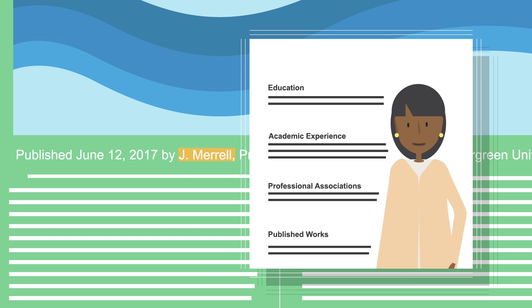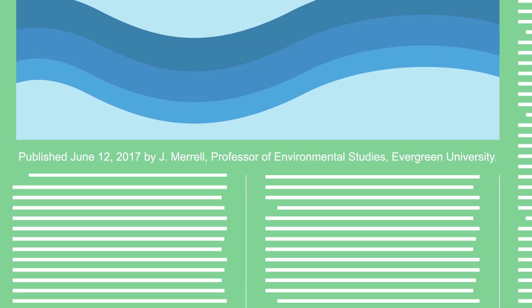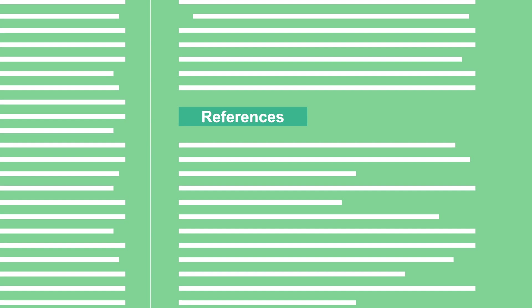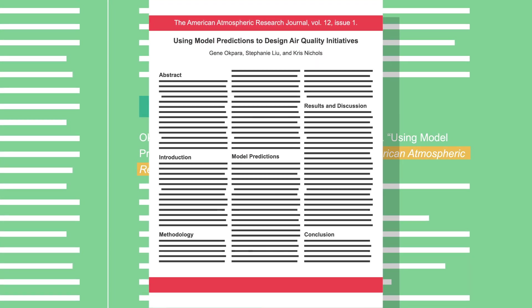Determine the accuracy of a source by researching the author's credentials, affiliations, and other published works. For sources found online, this type of information is displayed on the About Us page. Accurate sources rely on the objective interpretation of evidence. Scientific reports, for example, often include a methodology section that describes the research process to validate the author's conclusions.